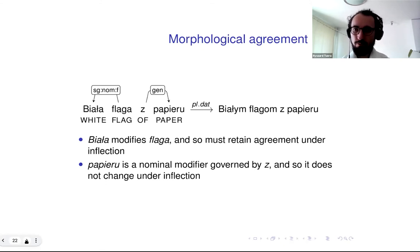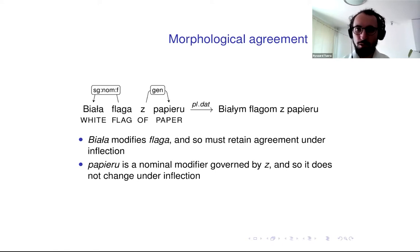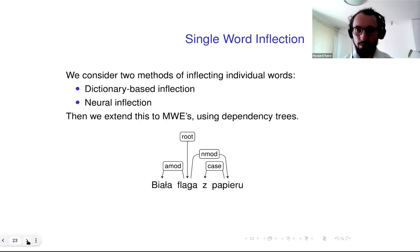Inflecting multi-word expressions is more difficult because of the relations of morphological agreement and morphological governance. In this example, the adjective modifier 'biała' needs to agree with the root noun 'flaga' with respect to number, case, and gender, whereas the nominal modifier 'papieru' is bound by a preposition and so does not change under inflection. To obtain proper inflections we need to take these phenomena into account.